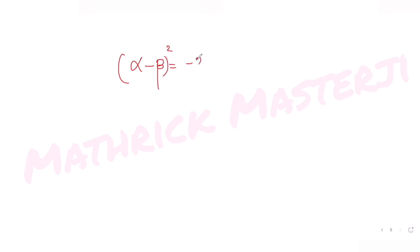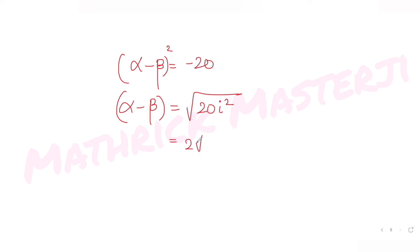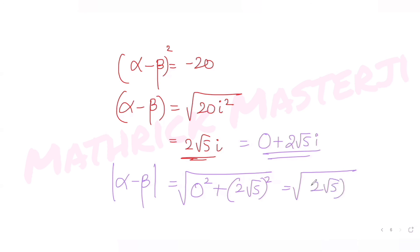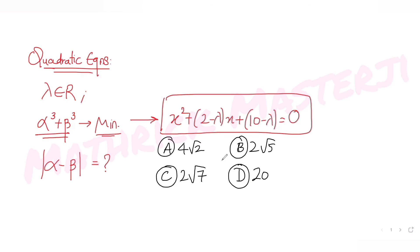Since (α - β)² = -20, taking the square root gives α - β = √(-20) = 2√5 · i, which is a complex number. The magnitude of α - β, written as 0 + 2√5·i, is √(0² + (2√5)²) = 2√5. So the magnitude of (α - β) is 2√5.